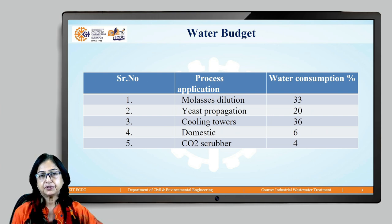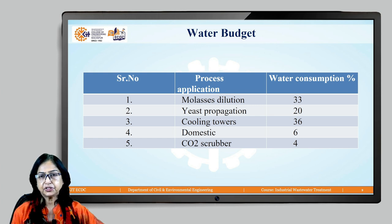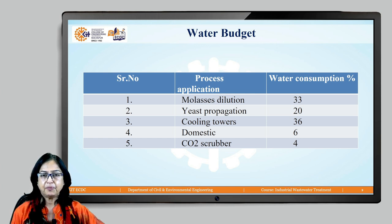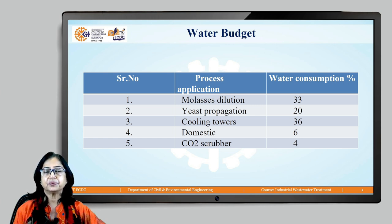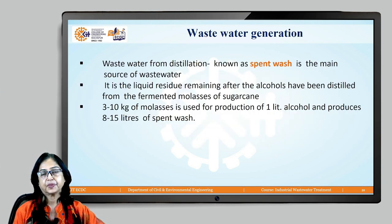Looking at the water budget: 33 percent of water is required for molasses dilution, 20 percent for yeast propagation, 36 percent for cooling towers — cooling is required during both fermentation and distillation — 6 percent for domestic requirements, and 4 percent for the CO2 scrubber, since CO2 is generated during the fermentation process.